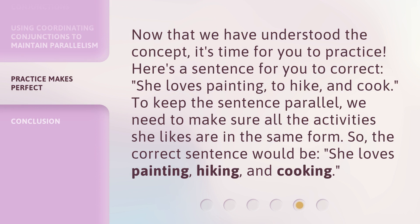Now that we have understood the concept, it's time for you to practice. Here's a sentence for you to correct: 'She loves painting, to hike, and cook.' To keep the sentence parallel, we need to make sure all the activities she likes are in the same form. So, the correct sentence would be: 'She loves painting, hiking, and cooking.'